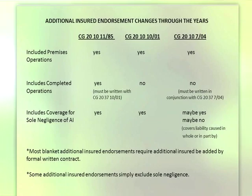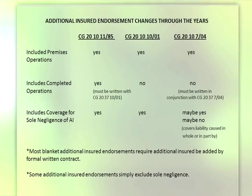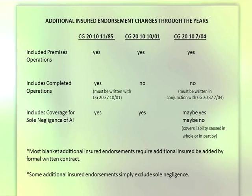In 2010, another endorsement came out — the CG 2010-01. That was a 2001 endorsement that provided coverage for premises operations and also provided coverage for the sole negligence of the additional insured. It did not, however, provide additional insured status for products and completed operations. That had to be done on a separate endorsement called the 2037. The additional insured endorsement wasn't what your contracts required.